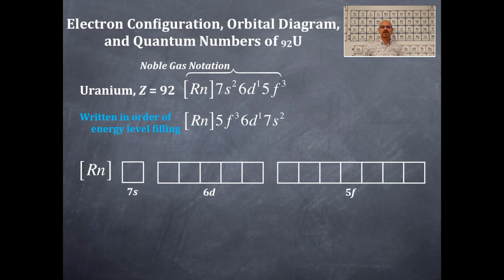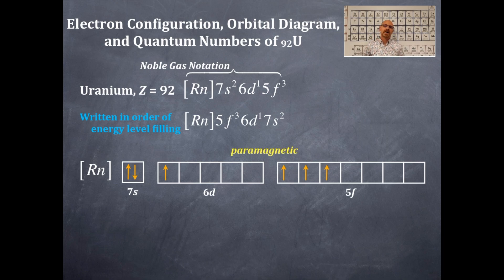So here we go — we're going to do this again with electrons. We've got 1 and then 2 in the 7S2. Then we've got a 6D1, so we've got only 1 electron here. Then we've got a 5F3 — 1, 2, 3. Remember, we've got our valence electrons, and this is paramagnetic because it has unpaired electrons, so it's attracted to a magnetic field. There are your valence electrons and paramagnetism.